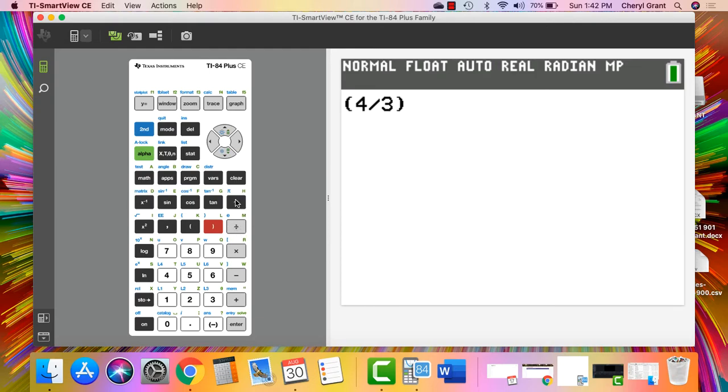Then in order to do π, what you're going to do is look right above your division button. There's what looks like an arrow up button, and then in a different color above that button you should see your π. Sometimes it's yellow, sometimes it's green. Because mine is in blue, I'm going to hit the blue button first to access anything that's in blue. So I'm going to hit my blue button, which is the second button, and then I'm going to hit the arrow up button for the π, and your π should show up here.